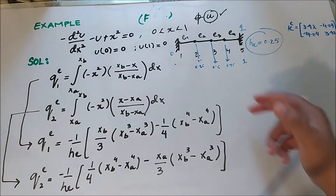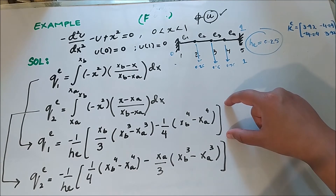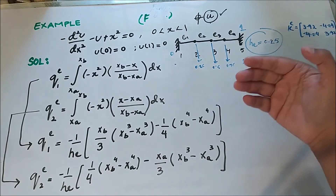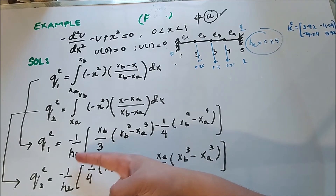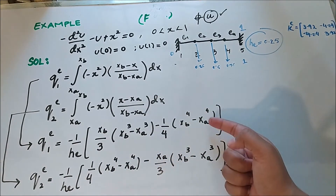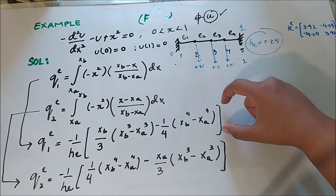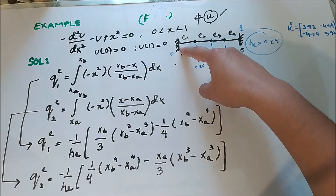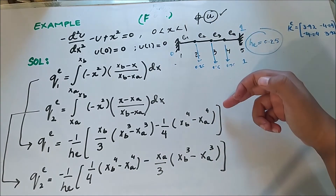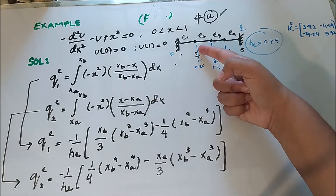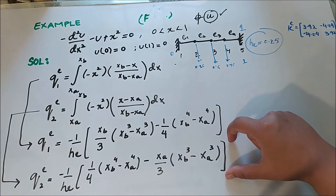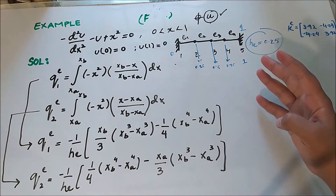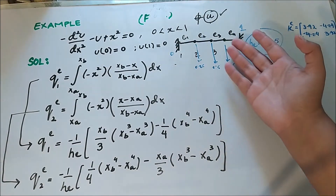After solving these two integrals, we get the force on the first node and the force on the second node. To find the forces for the first element, we plug the length 0.25, x_b = 0.25, and x_a = 0 into both q1 and q2 to get discrete force values. Similarly, for the second element we plug x_a = 0.25 and x_b = 0.5 to get the forces for those two nodes. This gives us four force values across the two elements.